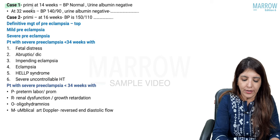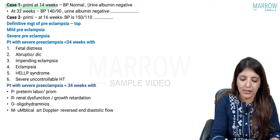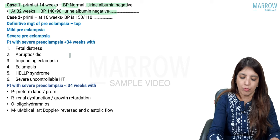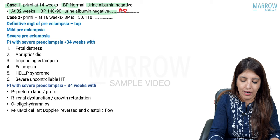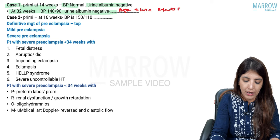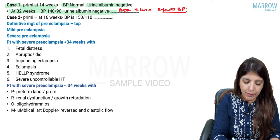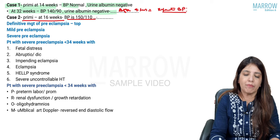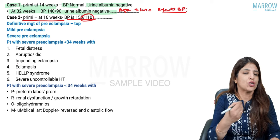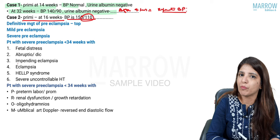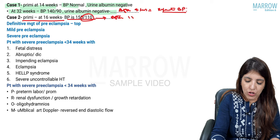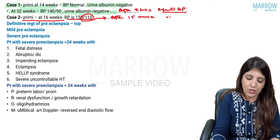Case one: a primigravida comes at 14 weeks with normal BP and negative urine albumin. At 32 weeks her BP is 140 by 90 with normal albumin — the next step is to repeat her BP after four hours. If a primigravida comes at 16 weeks with BP 150 by 110 — because diastolic is 110, she is in the category of severe hypertension — repeat BP after 15 minutes.